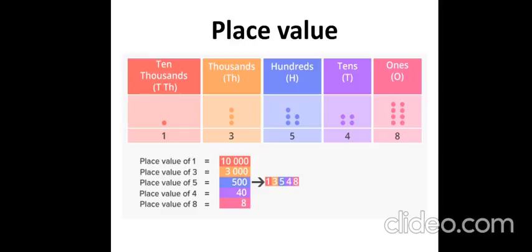See the example picture. The number is 13,548. The ones place of the number is 8. The tens place is 4, so 40. The hundreds place is 5, so 500. The thousands place is 3, so 3,000. And the ten thousands place is 1, so 10,000.